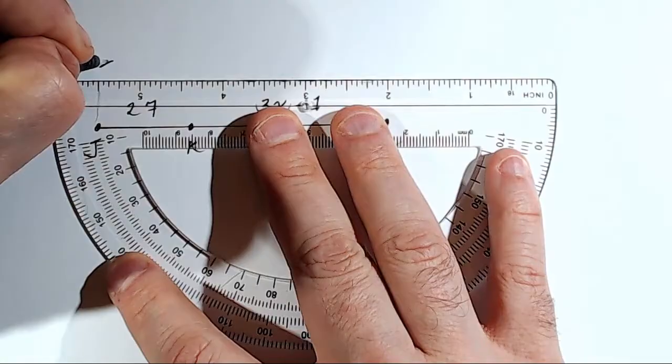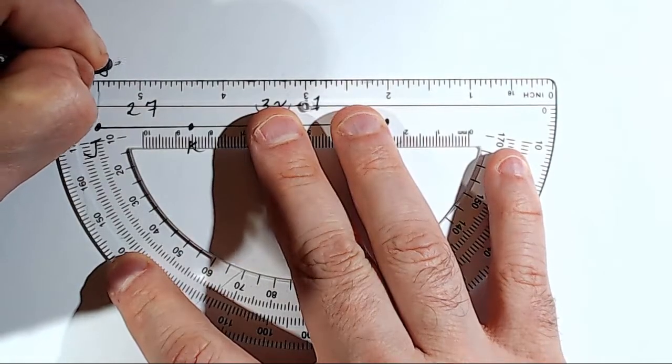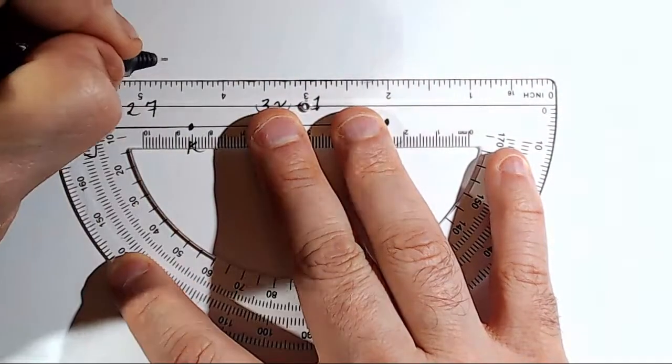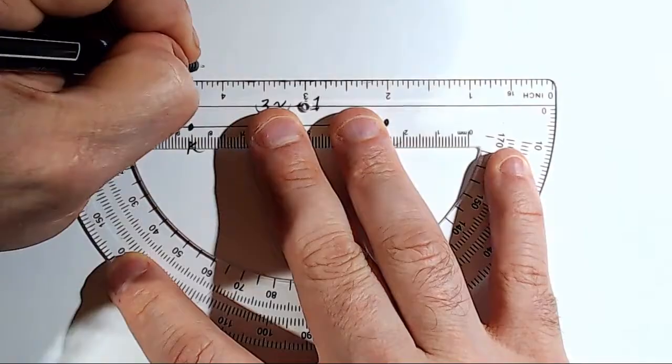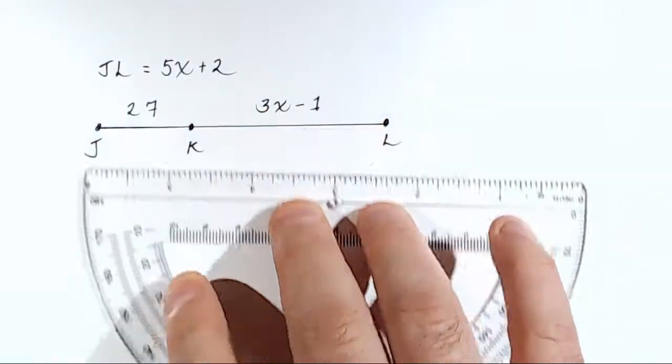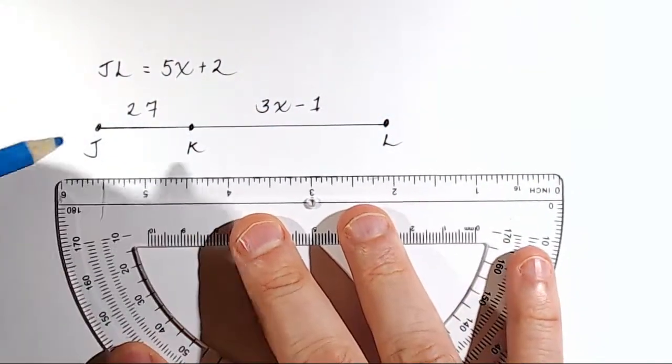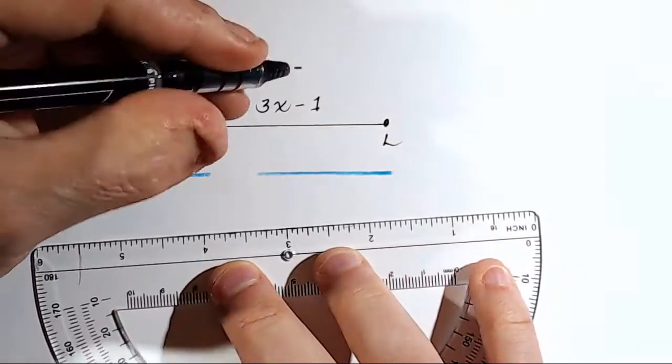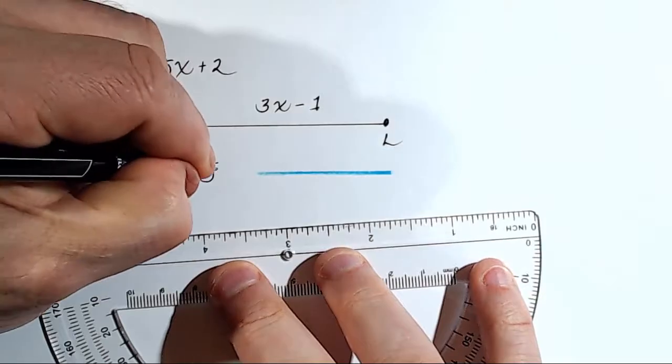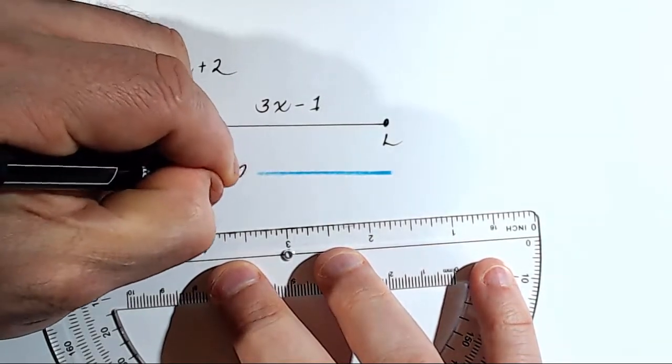The distance from J all the way to L is equal to 5X plus 2. Let me draw that in. That means that this whole distance from here all the way over is equal to 5X plus 2.